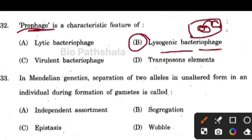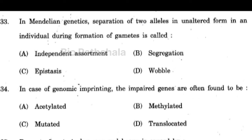Next question: in Mendelian genetics, separation of two alleles in unaltered form in an individual during formation of gametes is known as segregation.